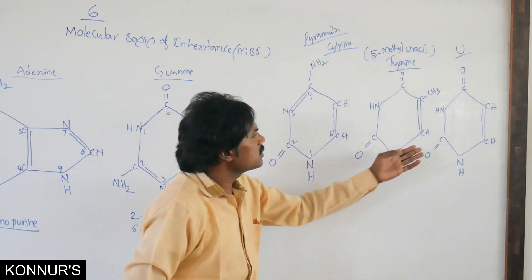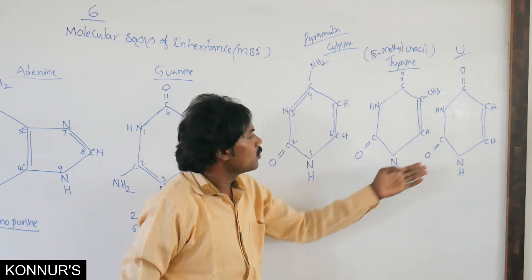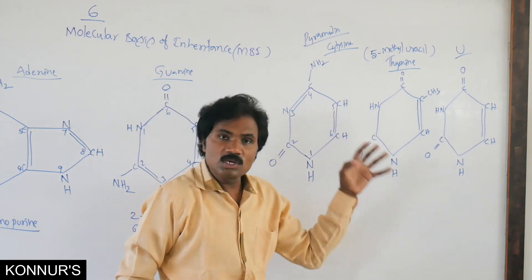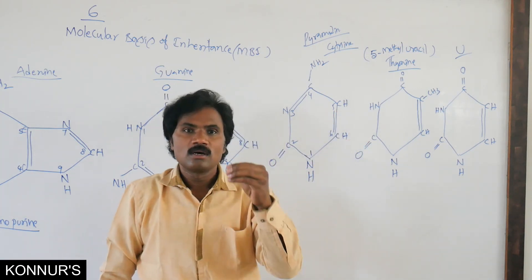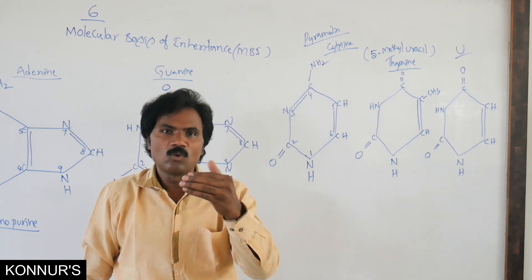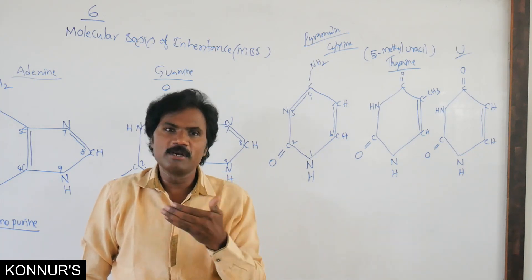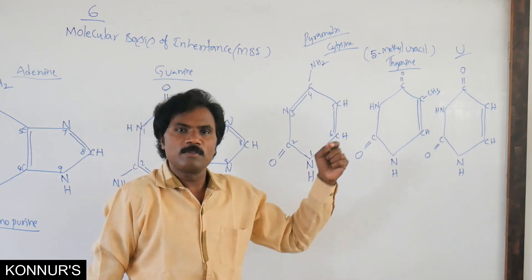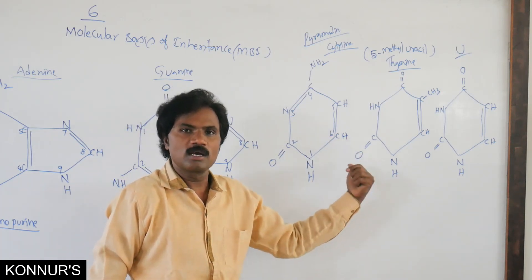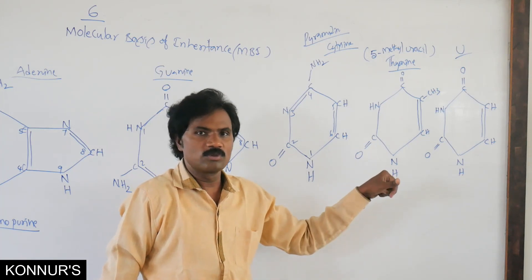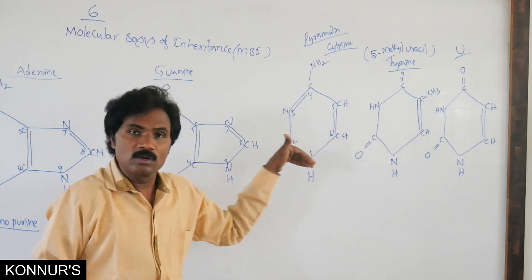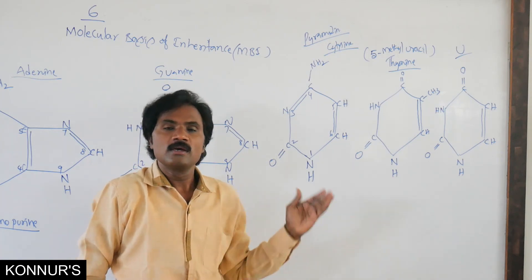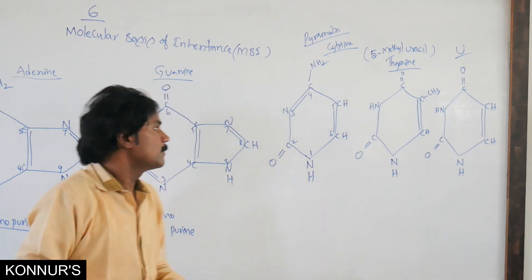Uracil has its usual structure. Sometimes in exams, they ask you to diagrammatically identify one among the purines or one among the pyrimidines, asking where the minor variation is present — which carbon atom has the oxo group and which has the amino group. Understanding these particular structures is necessary to grasp the forthcoming concepts.